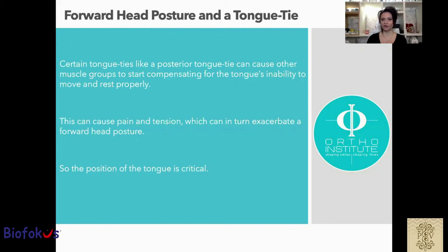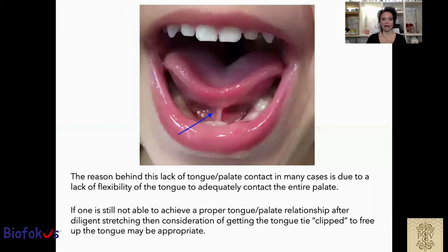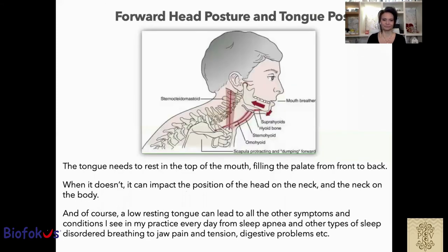The position of the tongue is crucial. The reason behind lack of tongue-palate contact in many cases is due to a lack of flexibility of the tongue to adequately contact the entire palate. If one is still not able to achieve proper tongue-palate relationship after diligent stretching, then consideration of cutting the tongue tie to free the tongue might be appropriate. The tongue needs to rest at the top of the mouth, sealing the palate from front to back. When it doesn't, it can impact the position of the head, neck, and body. A low or restricted tongue can lead to other symptoms and conditions.